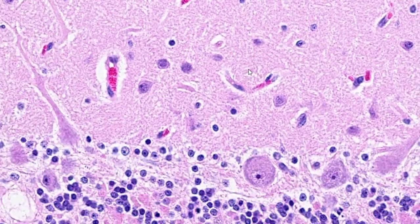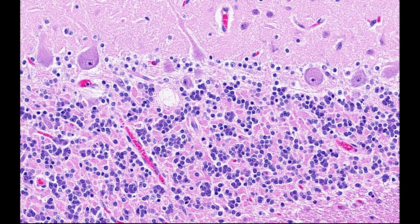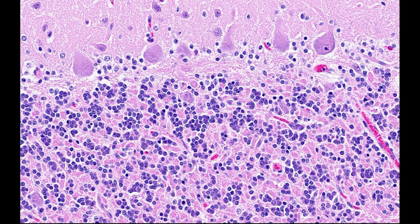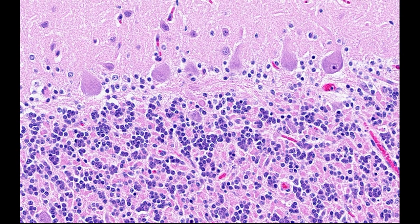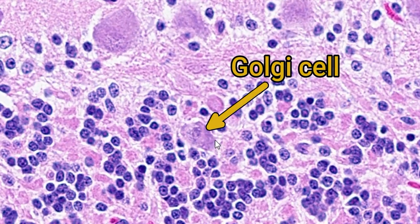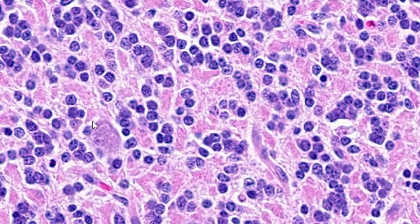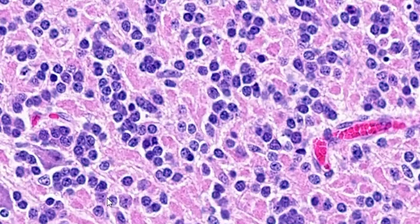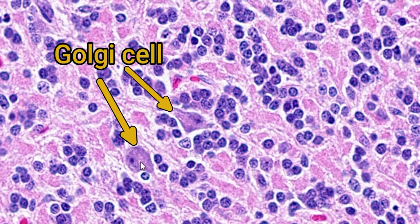The final type of neuron we're going to talk about is the Golgi cell. These are located in the granular layer and are medium-sized neurons, so they're quite easy to spot amongst the much smaller granule cells. Their function is to inhibit and modulate the activity of the granule cells, and they receive input from both mossy fibres and parallel fibres. There's an example here — you can see it's quite a large cell with lots of cytoplasm. Just over here we've got ones that are a bit better preserved; we can just about make out the nucleus with a nucleolus and the typical enlarged cytoplasm of a neuron. So this is a Golgi cell.